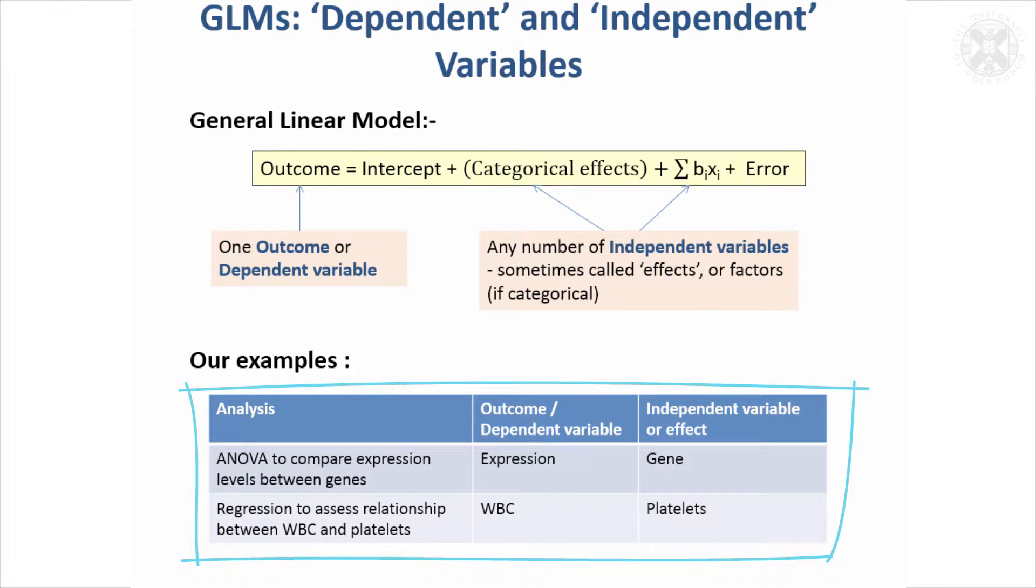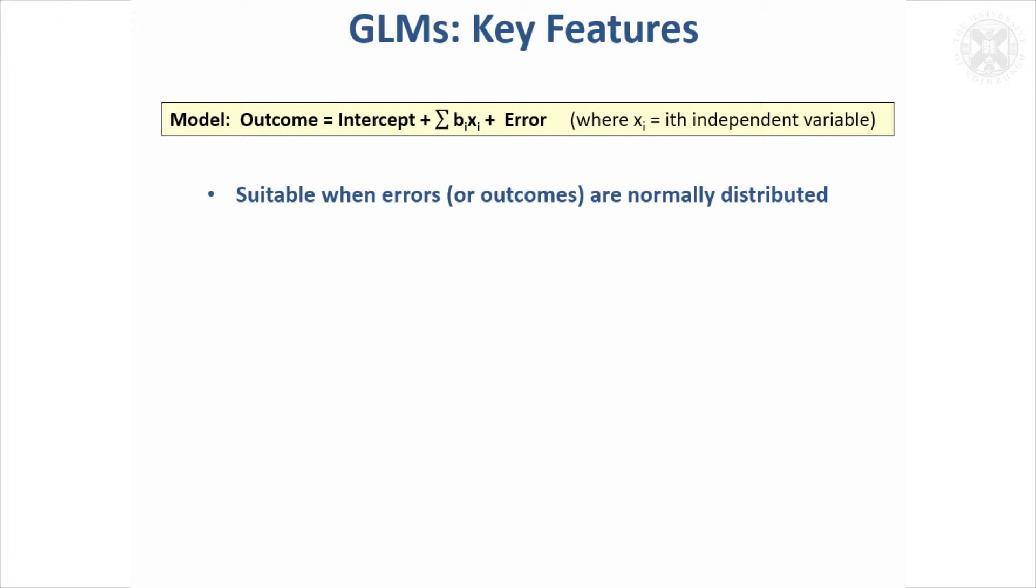The outcome is the thing you're interested in analyzing. In our first example, looking at gene expression comparing between different genes, the outcome would be expression and the independent variable would be gene. In our regression example, predicting white blood cell count from platelets, white blood cell count would be the outcome and platelets would be the independent variable.